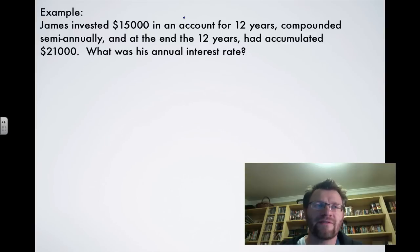Here's our second and last example. It says, James invested $15,000 in an account for 12 years, compounded semi-annually, and at the end of the 12 years had accumulated $21,000. What was his annual interest rate? So using our new formula, A equals P, 1 plus I, to the power of N.